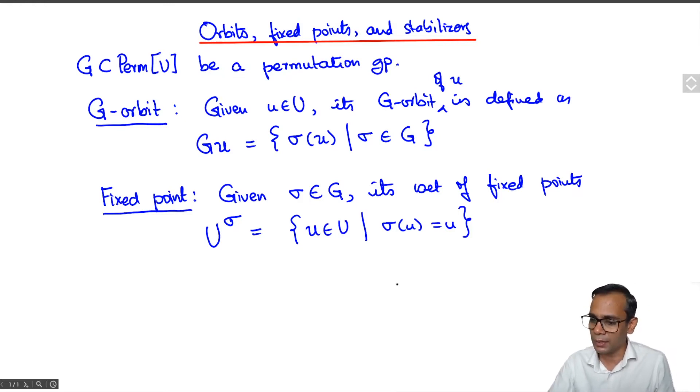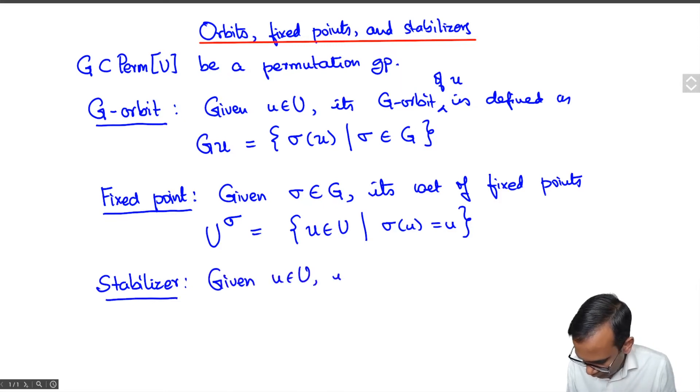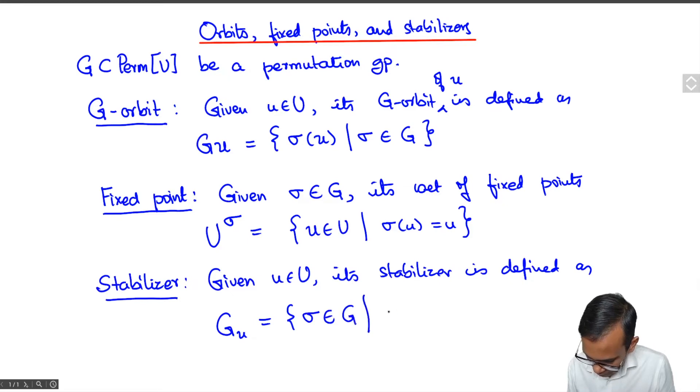And the last thing I need to define is the stabilizer of an element. Given U in U, its stabilizer is defined as G subscript U which consists of those sigma in G such that sigma U is equal to U. And what you can show is that this itself is also a permutation group.